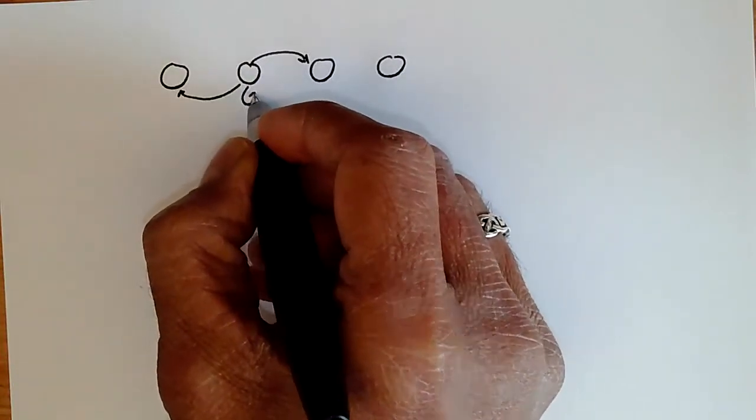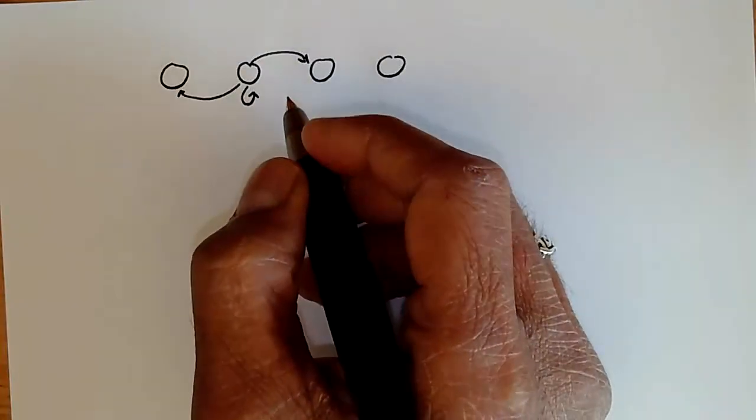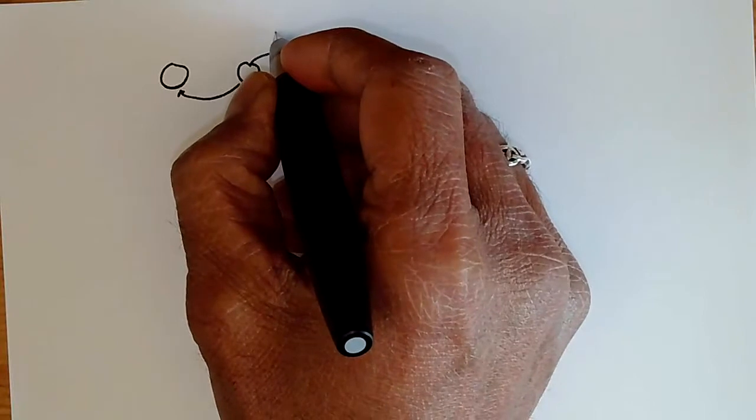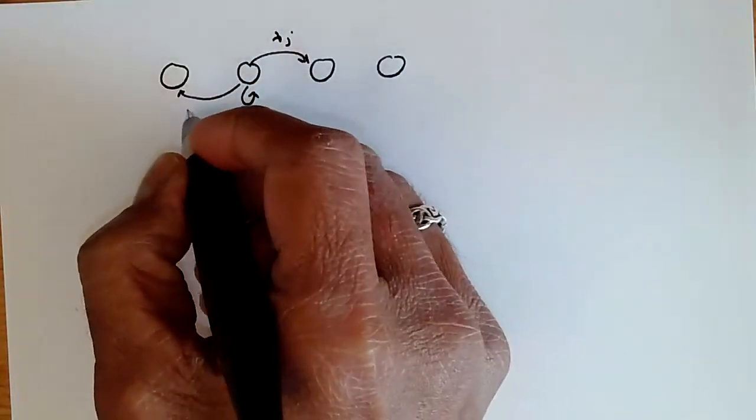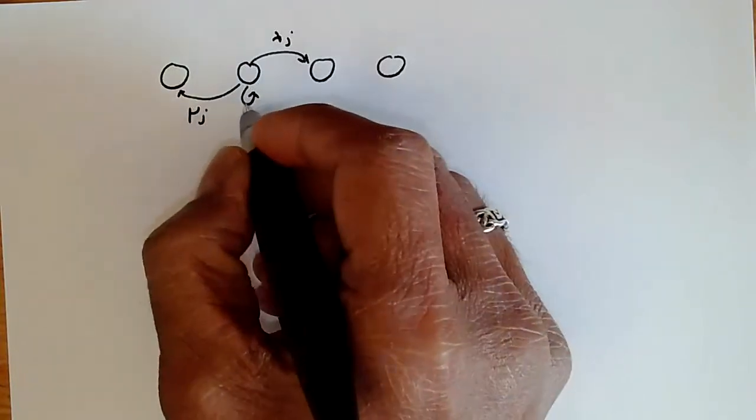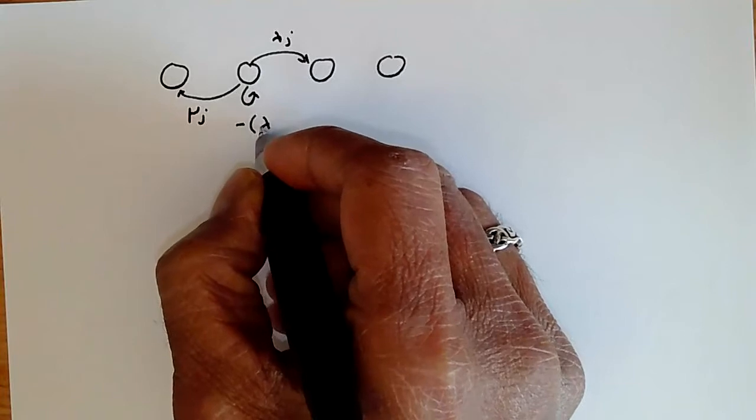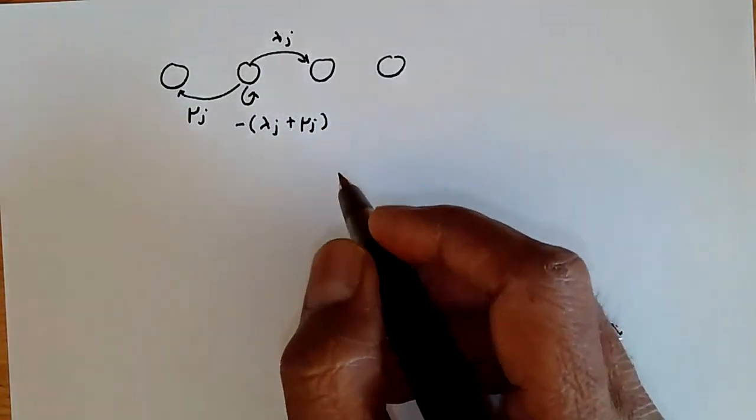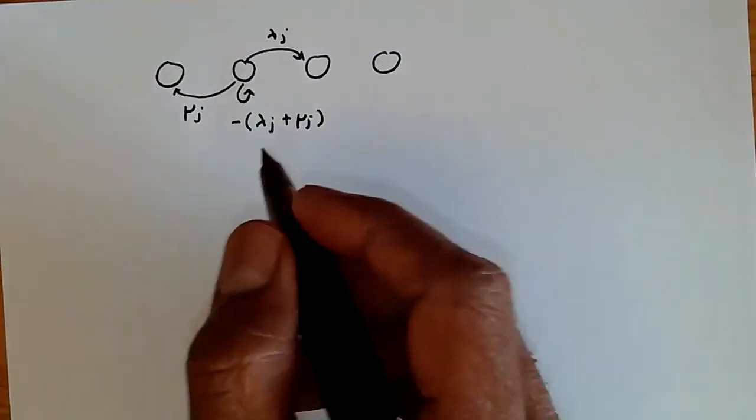And then, of course, we have the self-loop, which you never really draw, but which is the rate at which you continue to be in the same state. If we leave the state to go to the next state at the rate lambda j, we go to the lower state at the rate mu j, and then we stay in the same state at minus lambda j plus mu j. These values corresponding to this birth-death process completely define it.